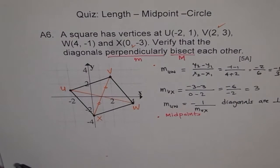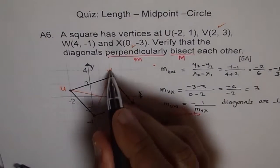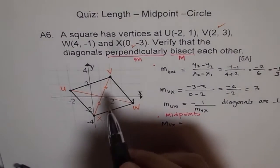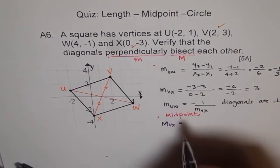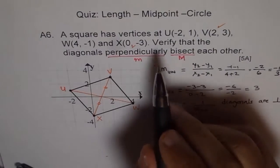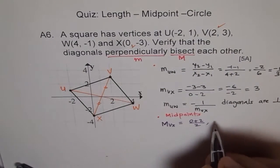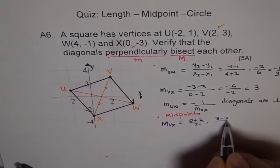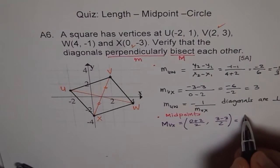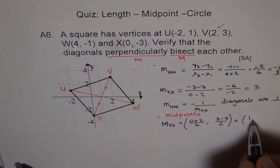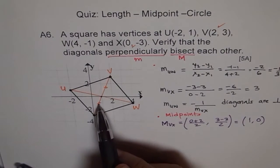So midpoint of VX. We calculate midpoint as: x-values (0 + 2) / 2, and y-values (3 + (-3)) / 2. So 3 minus 3 over 2. That equals (2/2, 0/2) = (1, 0). So the midpoint of VX is (1, 0).